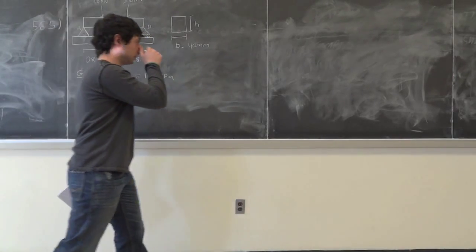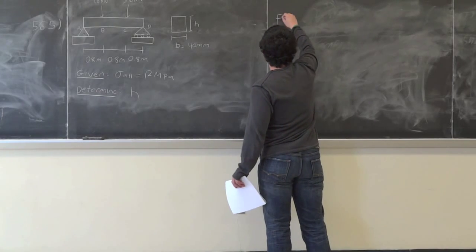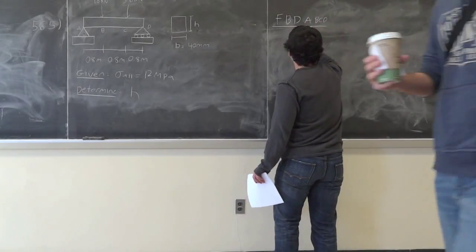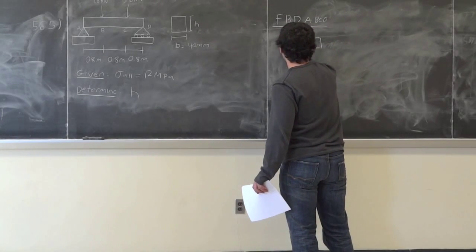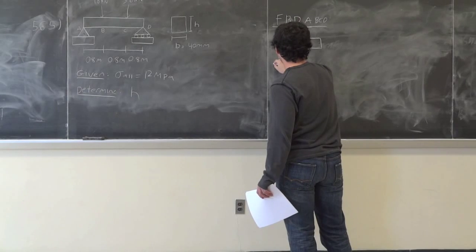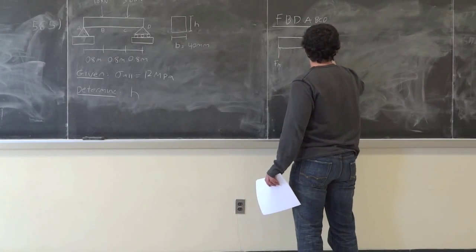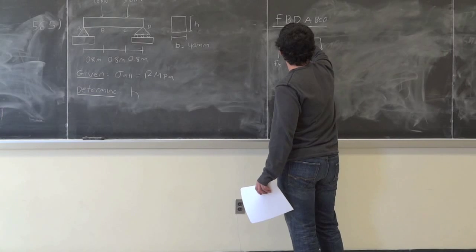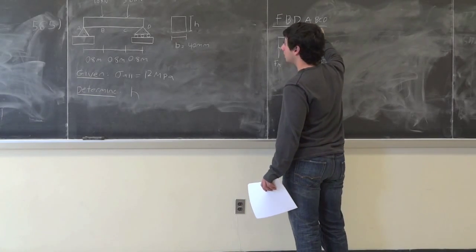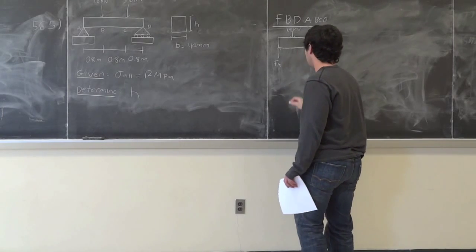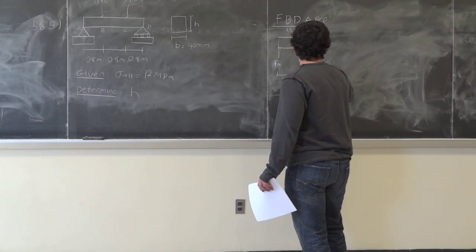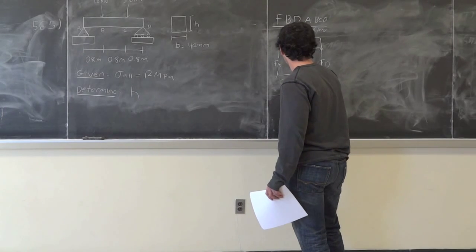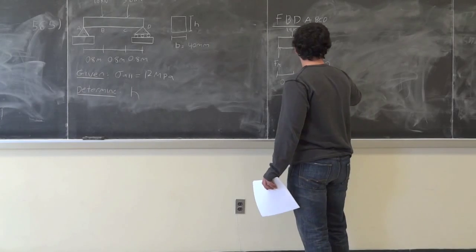Let's draw a free body diagram of this beam. So this is a free body diagram of A, B, and C. You have a reaction force at A — this is F_A. Then you have a reaction force at B — this is F_B. And then you also have these loads on top: this is 1.8 kN and this is 3.6 kN. You have distances of 0.8 meters, 0.8 meters, 0.8 meters — they're equidistant from each other.